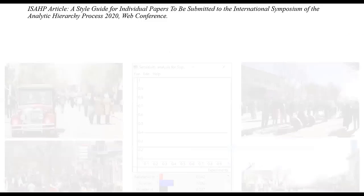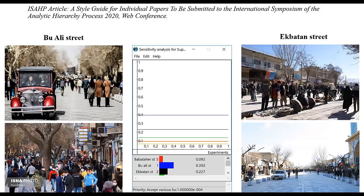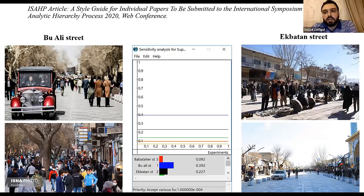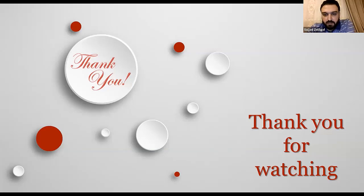The right one is the Vali-e-Asr street and the left is Ekbatan street. These are our key references. Thank you for watching.